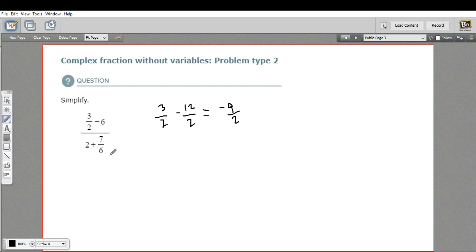Let's work on the bottom here. So 2 plus 7/6, I'll convert that 2 to sixths. So that would be 12 sixths plus 7 sixths, and that is 19 sixths. So this is my top, this is my bottom.